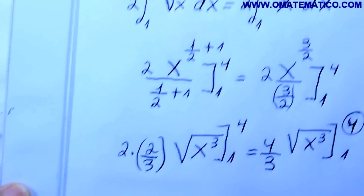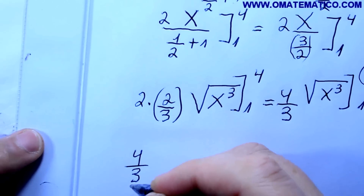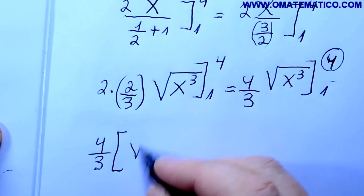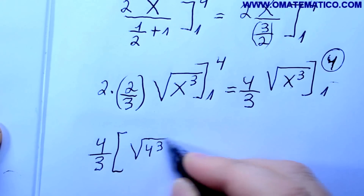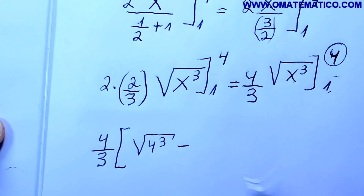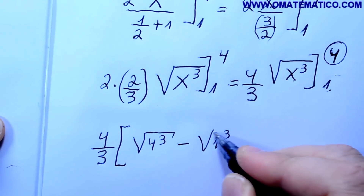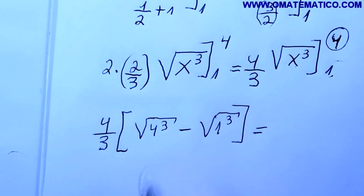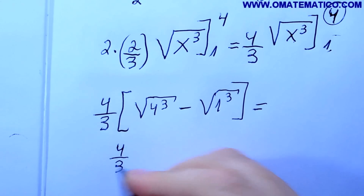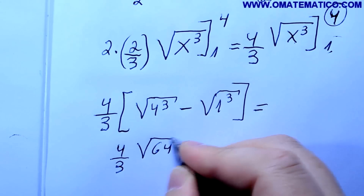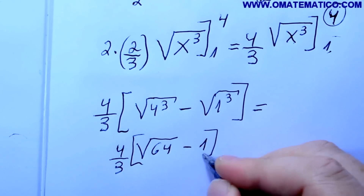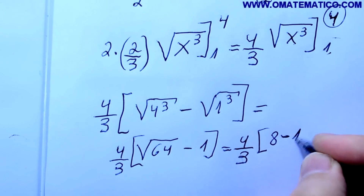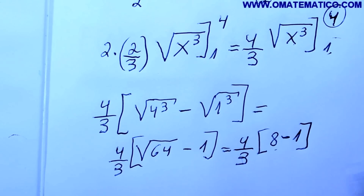Vai ficar 4 terços, e aí a gente coloca dentro do x o 4: raiz de 4 ao cubo, menos a gente substitui agora o número 1: raiz de 1 ao cubo. Se eu fizer 4 ao cubo dá 64. Então, 4 terços vezes raiz de 64. 1 ao cubo dá 1 aqui. Raiz de 64 é 8, vai dar 4 terços, 8 menos 1. 8 menos 1 é 7, 7 vezes 4 dá 28.